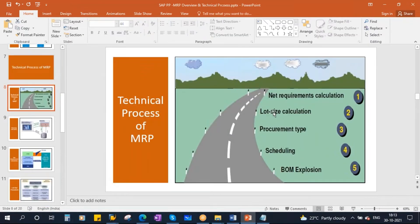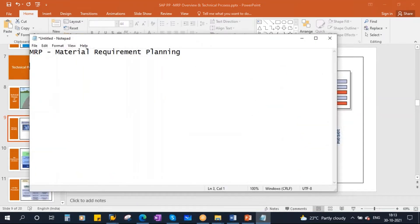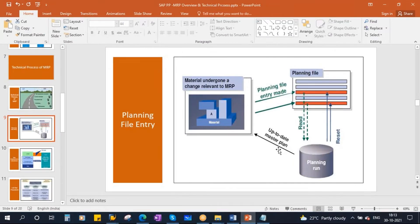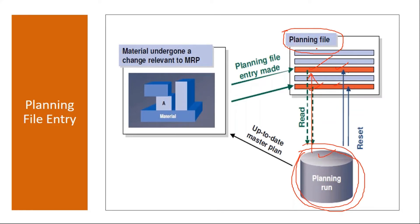Before going into net requirement calculation, we need to understand the planning file entry. What is this planning file entry and why is it used? Whenever you run MRP, the system will check whether that material has any planning file entry. If the material has a planning file entry, then MRP will plan that material. If that entry is not there, it will not plan. And when MRP is executed, that planning file entry is reset by the system.